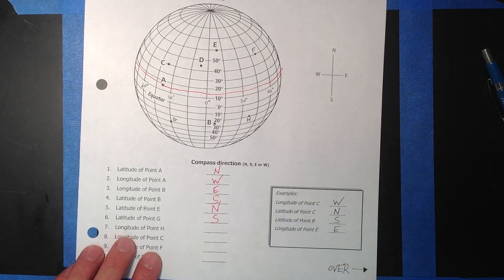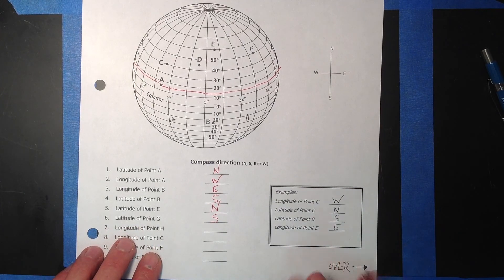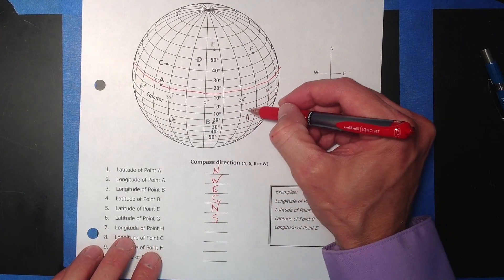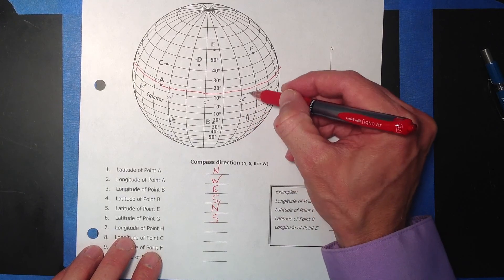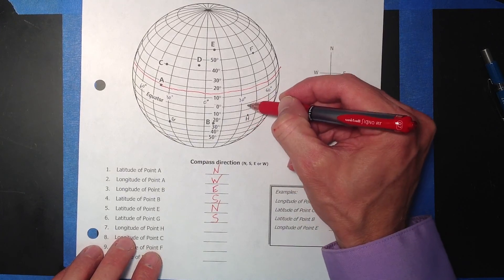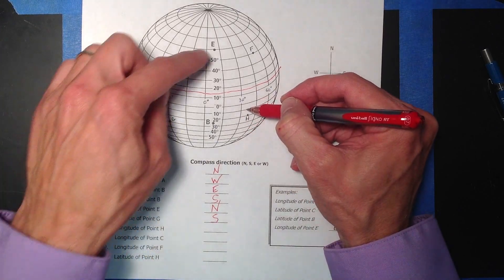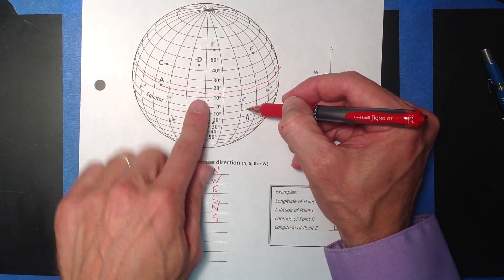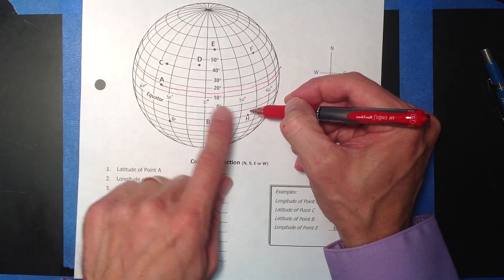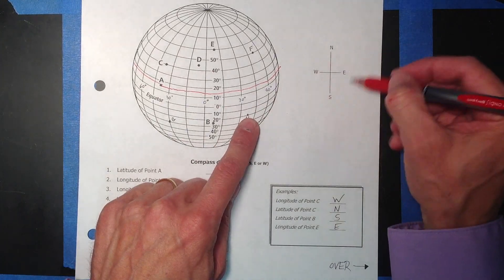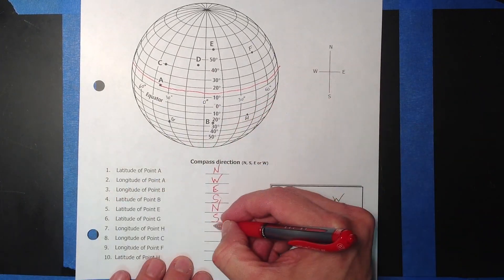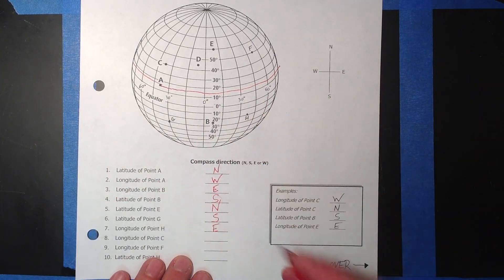Longitude of Point H. Longitude — that would be a line that goes this way. I'm comparing that to zero, which is right here. It is what direction from there? Using my compass rose, it is east. Therefore, it will be east.